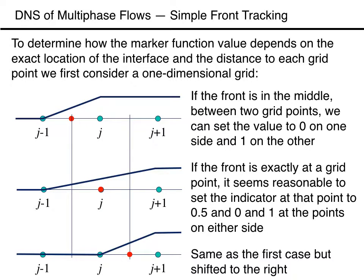The strategy that we use here is to simply set the markers at the grid points of the fixed grid based on the distance from the interface. To decide how the marker value depends on the distance, we start with a one-dimensional example. If the front is located exactly in the middle between two grid points, say j-1 and j, then it seems reasonable that the marker value at the grid point on one side is 0 and the value of the point on the other side is 1.